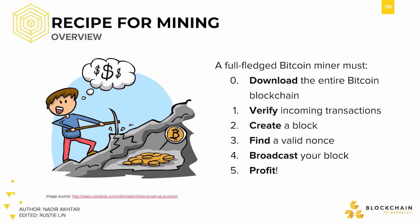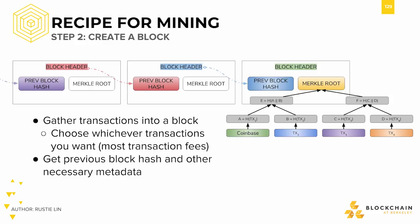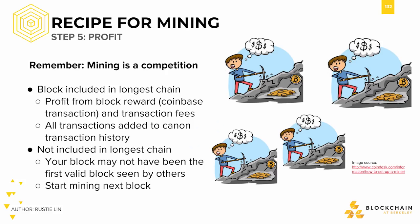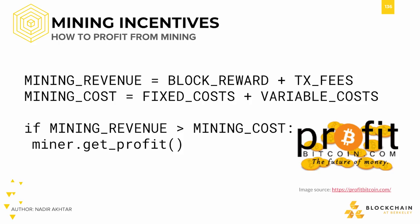We then went into an overview of mining — the very steps that a miner needs to do in order to make profit: downloading the entire blockchain, then verifying transactions, creating a block, finding a valid nonce, broadcasting that block, and finally getting profit. We went over why miners do things for profit. The equation breaks down to this: the block reward and transaction fees making up the revenue, and the fixed costs and variable costs making up the costs.